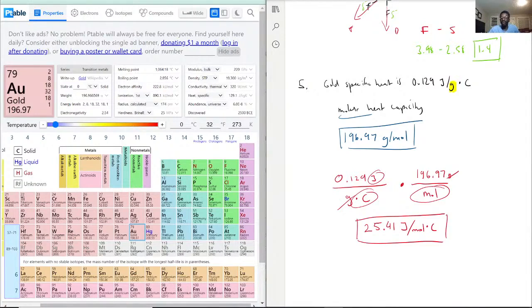This is our new molar heat capacity. For every mole and an increase in one degree Celsius, it will take 25.41 joules to increase that temperature for gold.